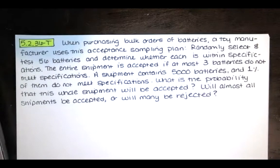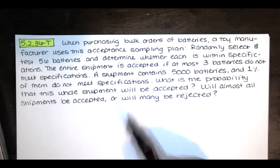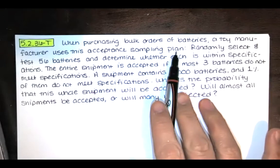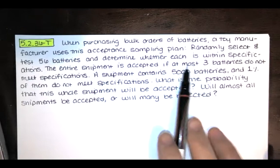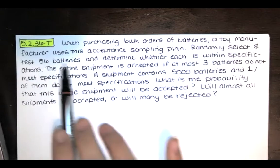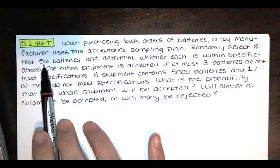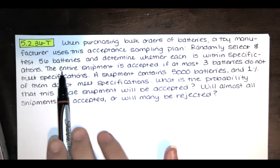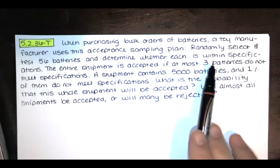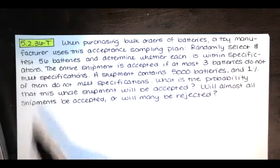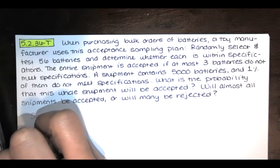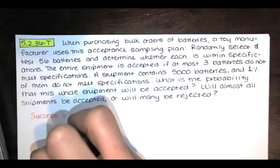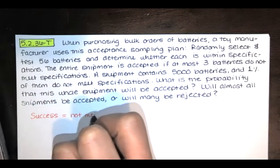Clearly we're dealing with a binomial distribution, because when we're talking about batteries, either they work or they don't work. We've got this acceptance sampling plan that says we're going to accept this shipment of 5,000 batteries if we randomly select 56 batteries and determine whether each of those 56 batteries is within specifications. We're going to accept the entire shipment if at most three batteries do not meet specifications. So we're going to define success as not meeting specifications.